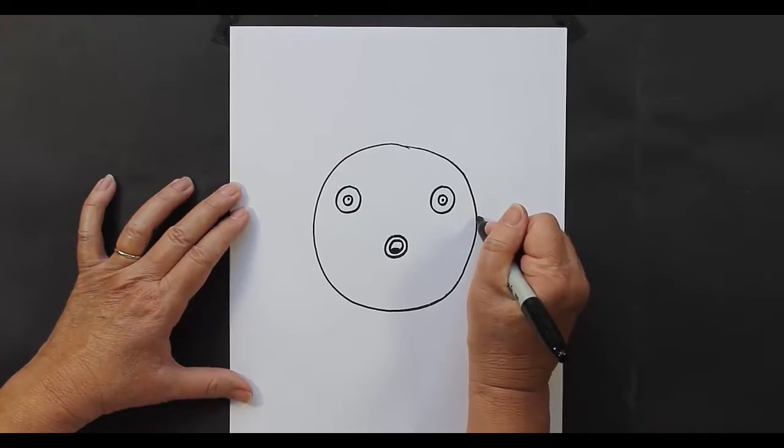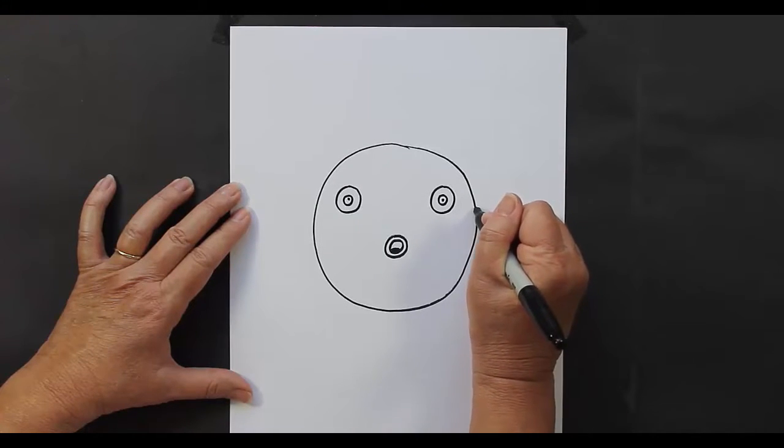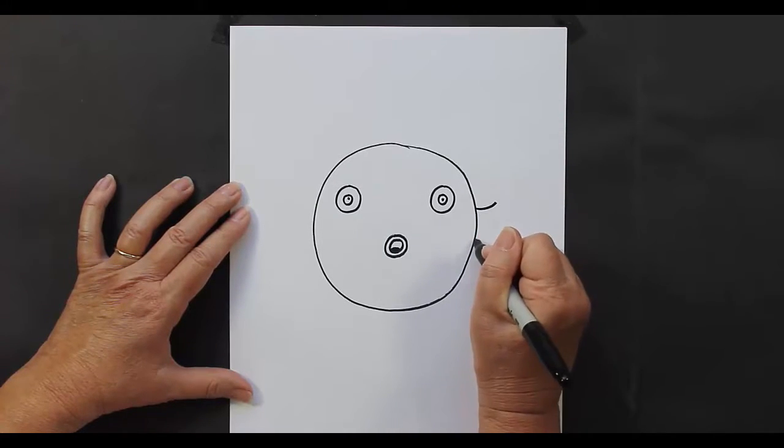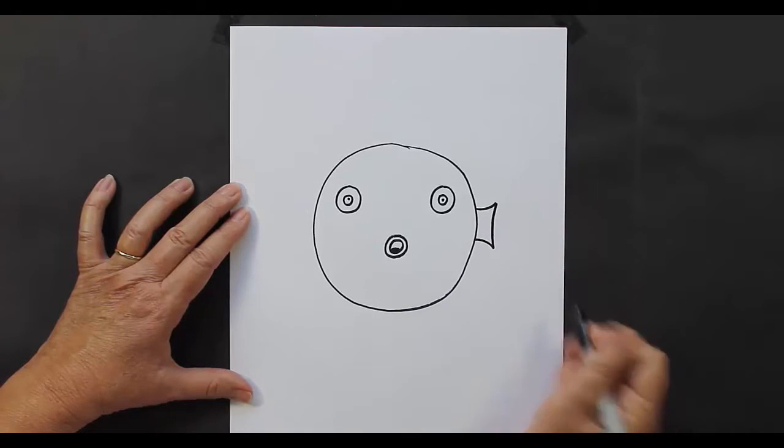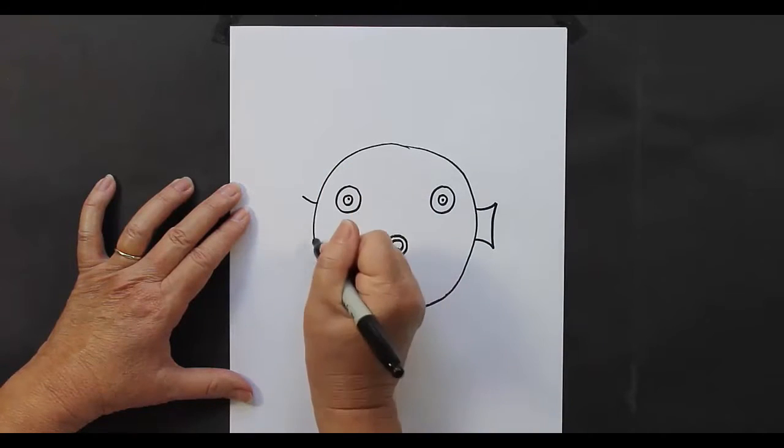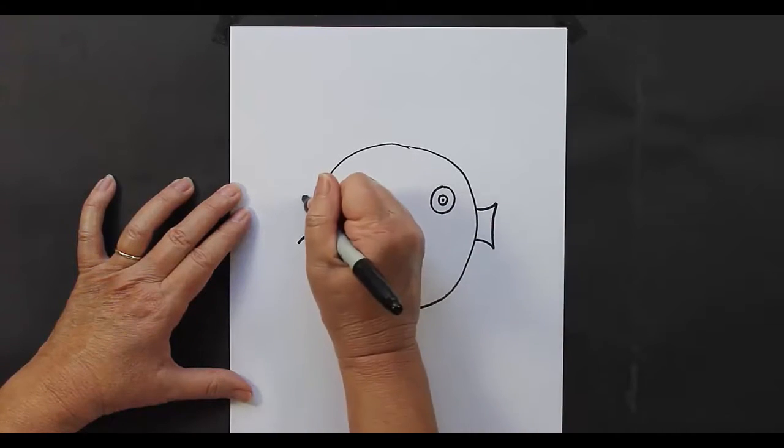Now we are going to make some fins on the side of his body. So curve line up, curve line down, and curve line attaching. Curve line up, curve line down, and attach.